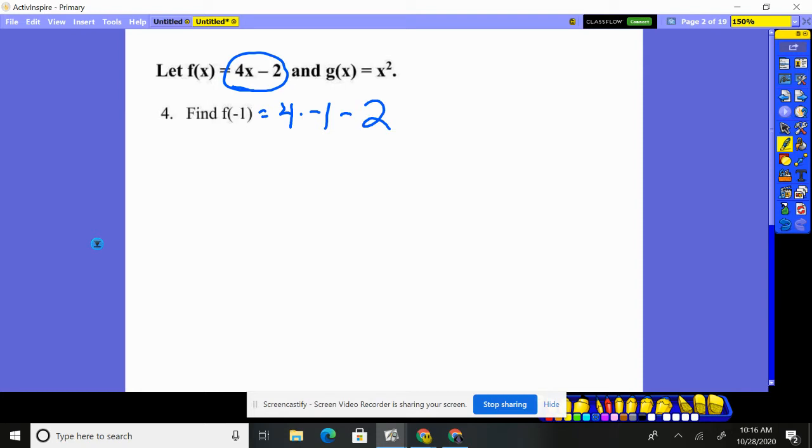So now it's just follow the order of operations. Multiply first, I get negative four there, minus two, negative six.